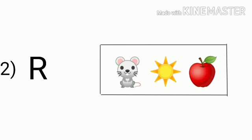Now let's see the second sound. It's R. And what all pictures are here? It's rat, sun, and apple. The picture that begins with the sound R is rat, so you will circle the rat.